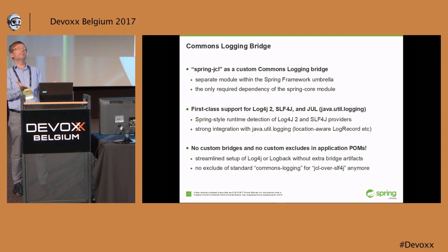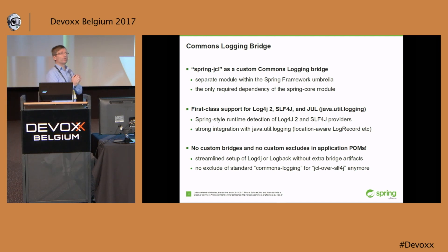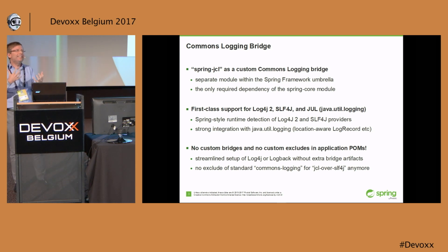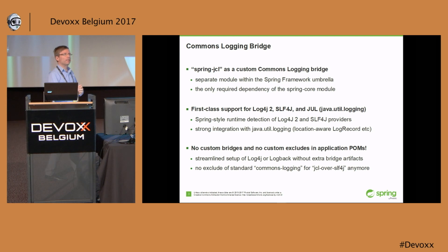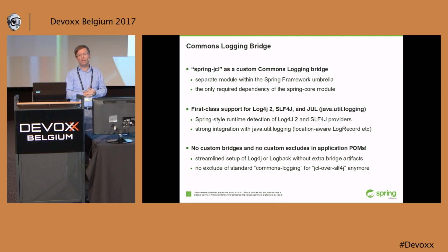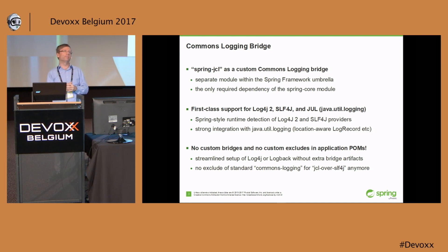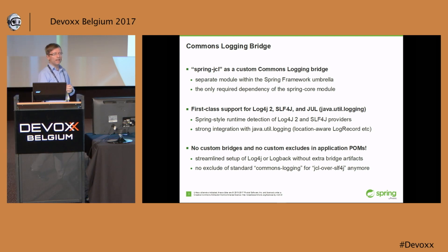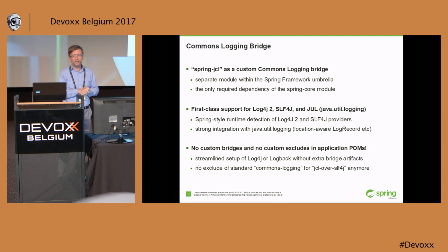For a better migration story in the ecosystem, it's also a very nice thing to keep existing logging code in action. So what did we end up doing? We implemented our own commons logging bridge — Spring JCL. So if you start using Spring Framework 5 or Spring Boot 2.0, which is built on that, you'll actually get a different default logging bridge. It's not the standard Apache Commons Logging implementation, but it's not JCL-over-SLF4J either. It's a logging bridge of our own called Spring JCL — the only required dependency that Spring Core comes with these days.